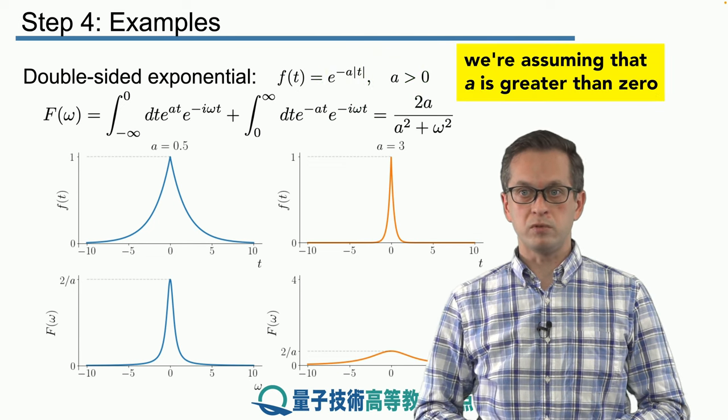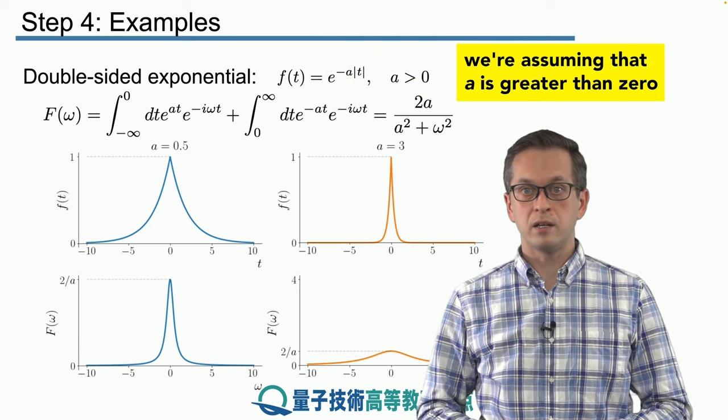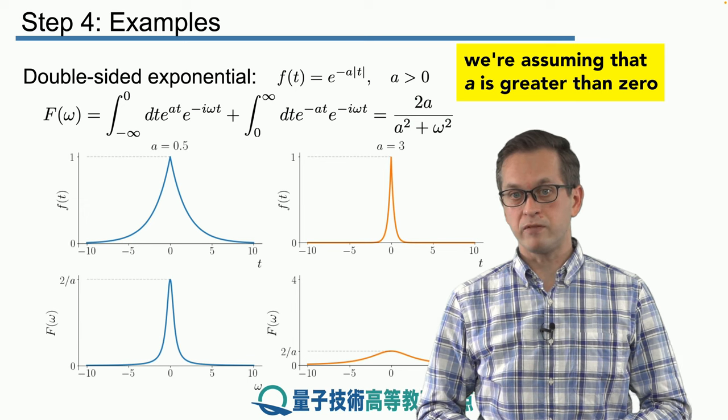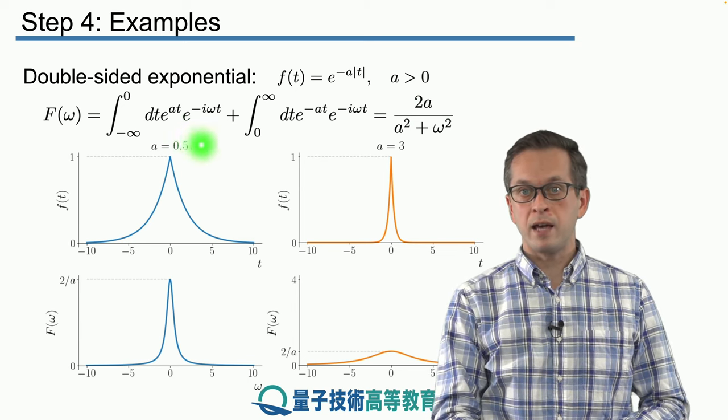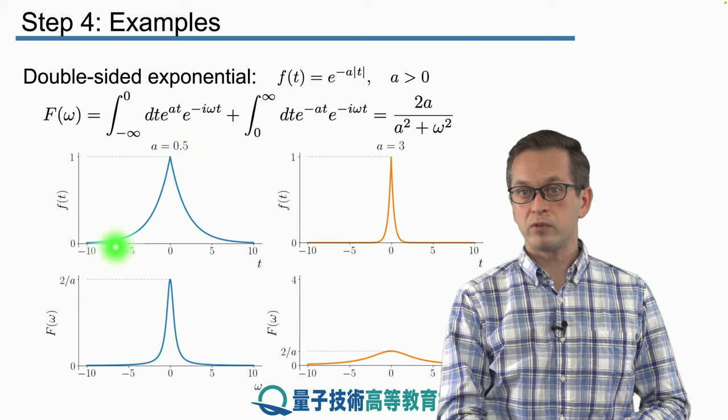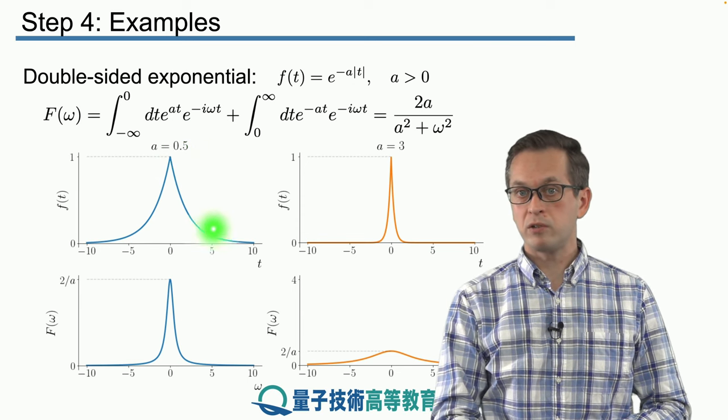And we are assuming that a is greater than zero just to have a nicely behaved function that doesn't diverge. So let's say that for a is equal to half, we've got this following function. So now the question is,